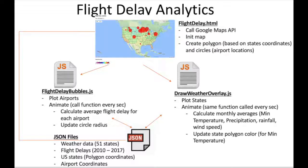The FlightDelayBubbles.js file contains the logic to analyze flight delays due to weather for each airport in the United States. The animate function is called every second, and the average flight delay for each airport for the particular month is calculated. Based on the magnitude of flight delay, the circle radius is updated accordingly.